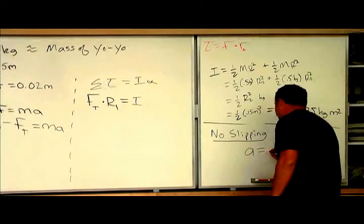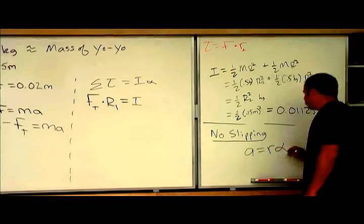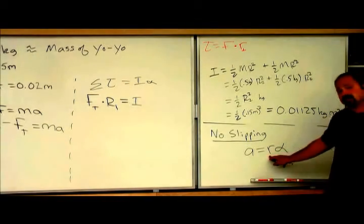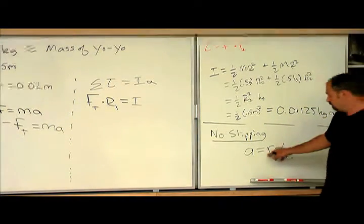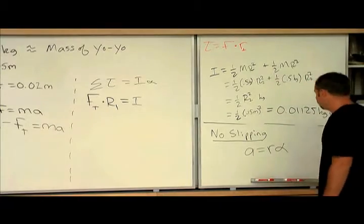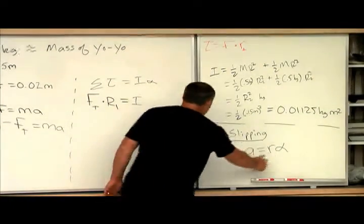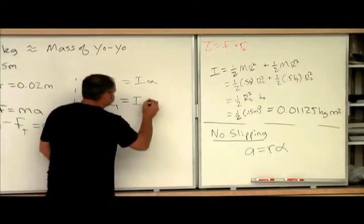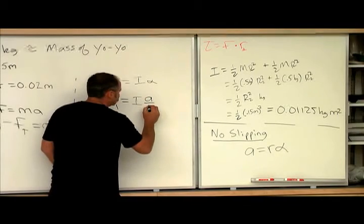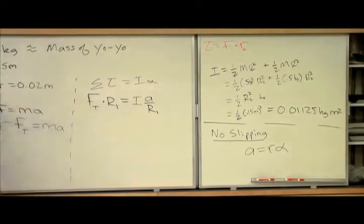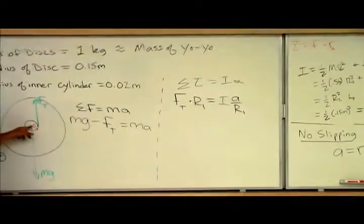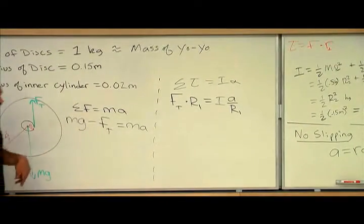Therefore, the linear acceleration is equal to r times the angular acceleration, where this is the distance from the rotation axis to the point of acceleration. So we can plug that in for alpha, and so alpha is just equal to the linear acceleration over r, which in this case is r1.